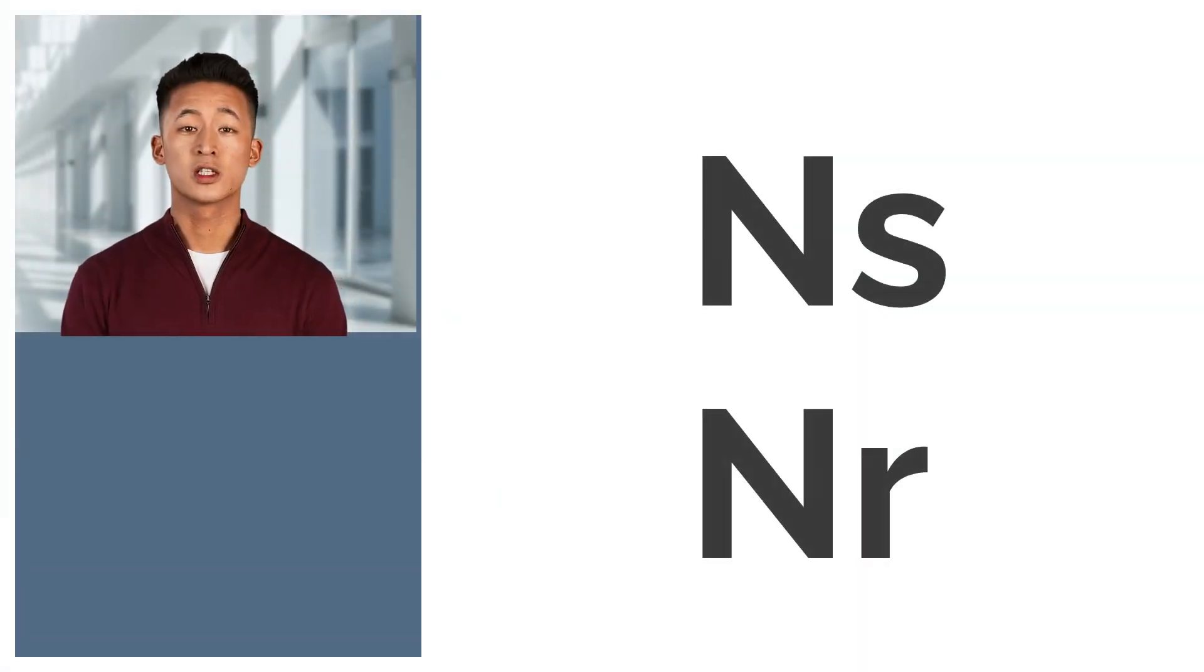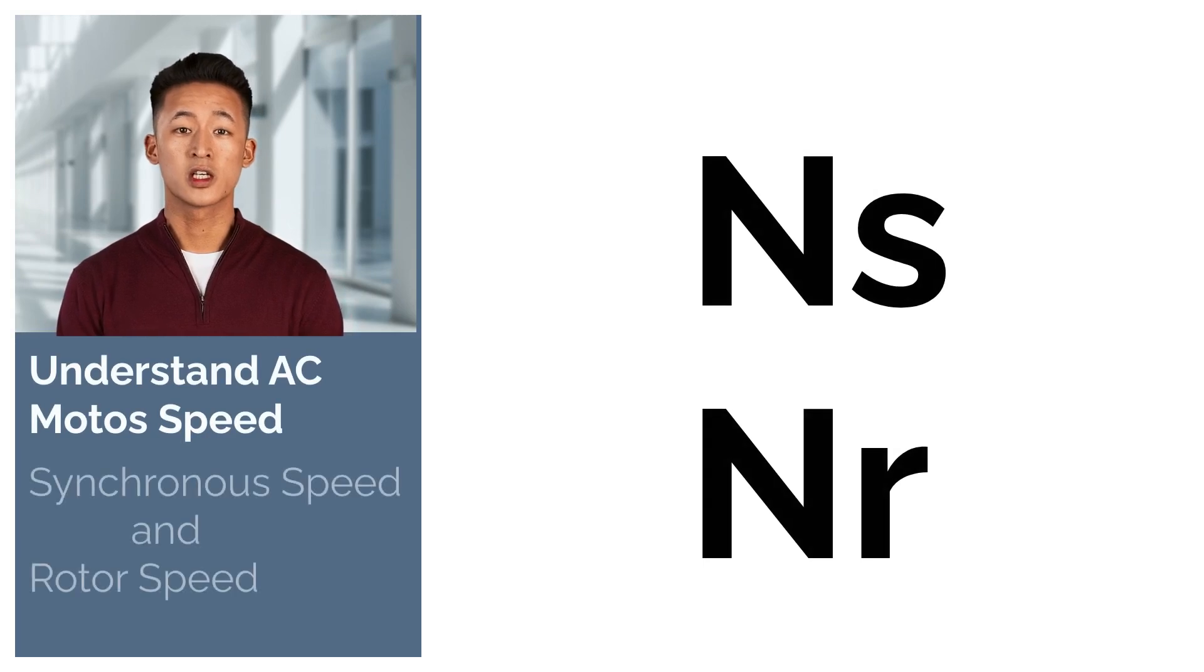When we talk about motor speed, there are two key speeds in AC motors: synchronous speed, often called NS, and rotor speed, often called NR.